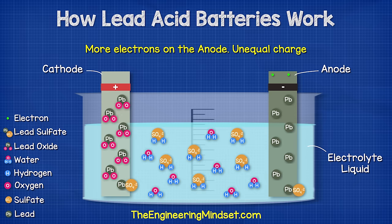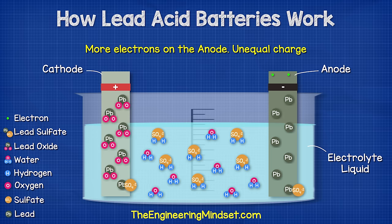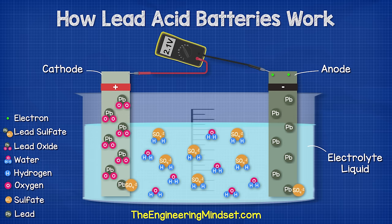So now we have a buildup of electrons on the negative terminal. As electrons are negatively charged, this means we have a difference in charge across the two terminals, and we can measure this with a voltmeter or a multimeter.